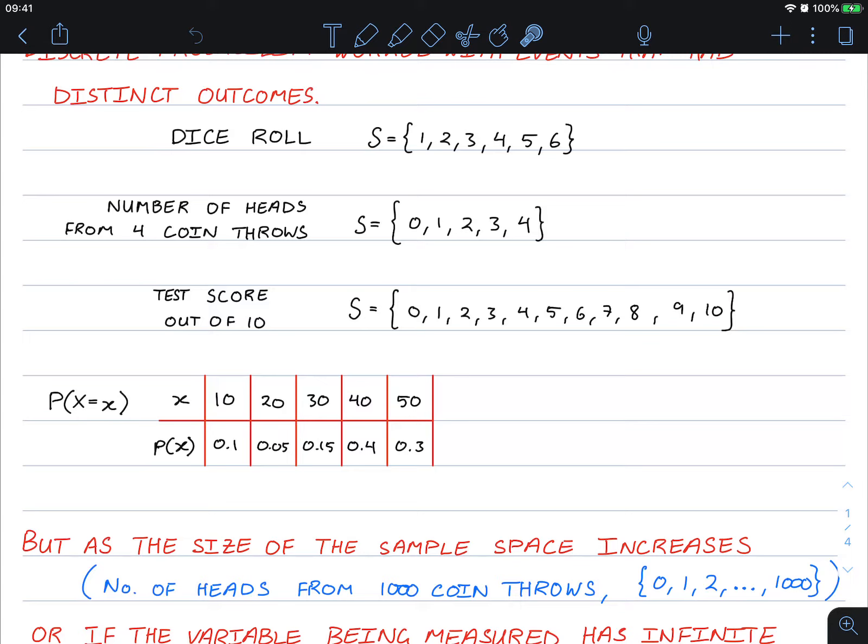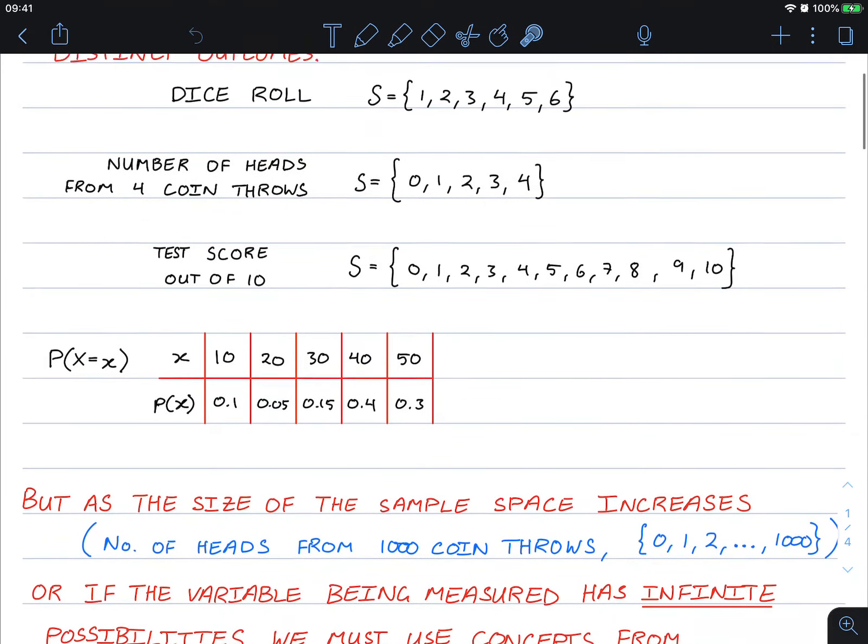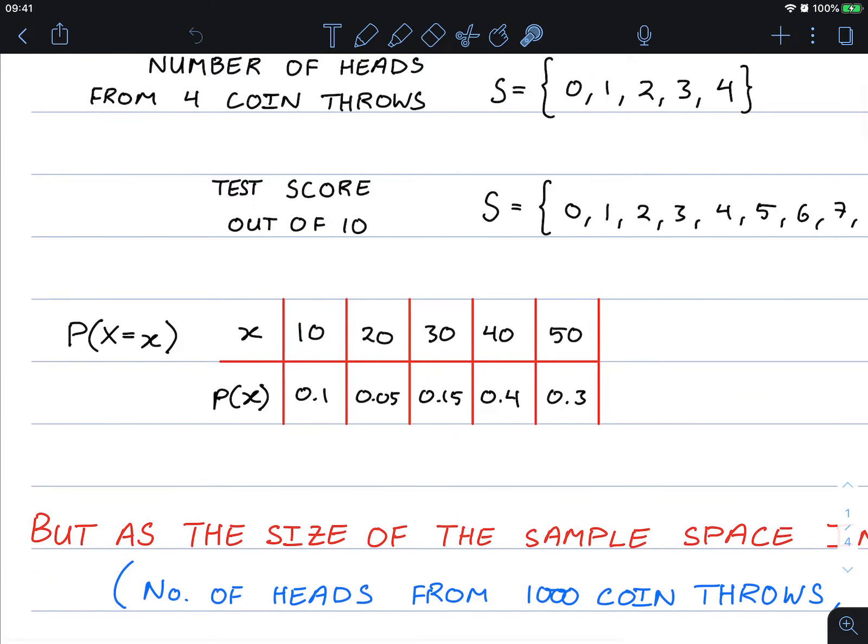A test score out of ten, considering that it's only whole number marks with no half marks, you could get the marks zero to ten. Even with probability distributions in these examples, we saw that only the numbers 10, 20, 30, 40, or 50 could occur in this particular discrete probability distribution.